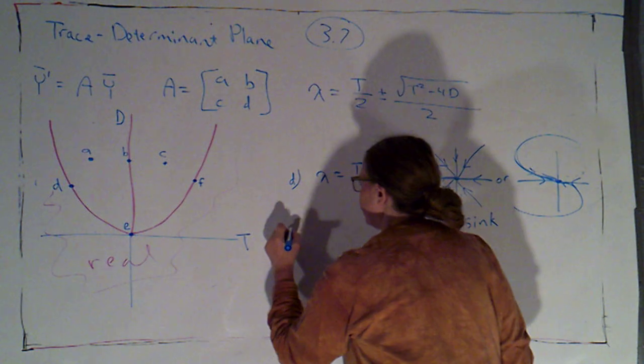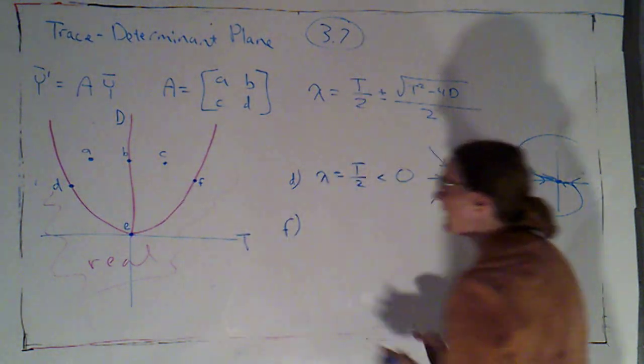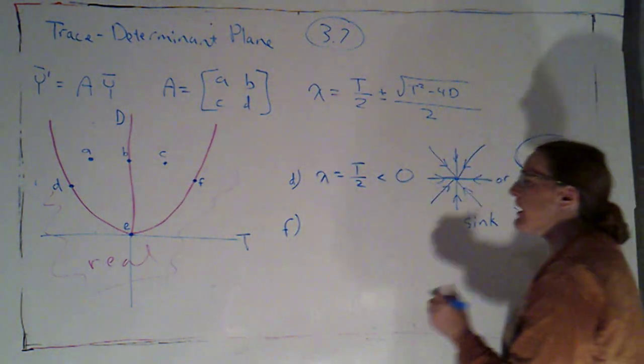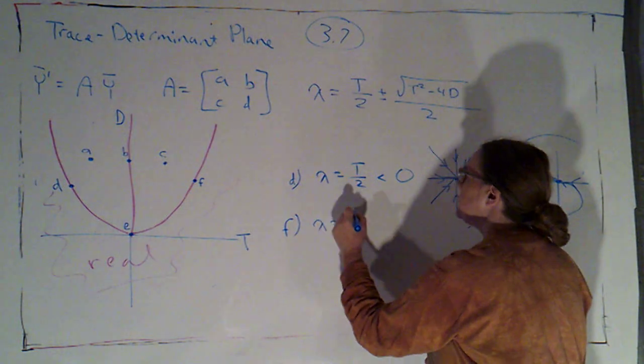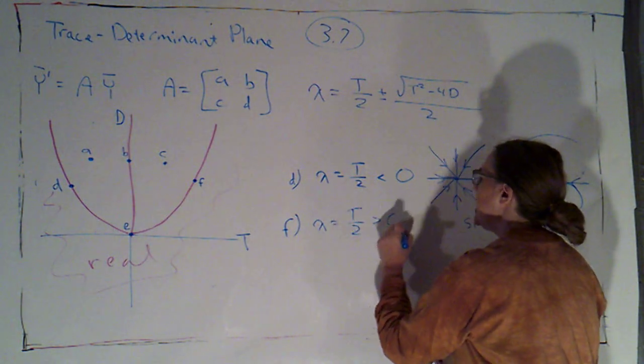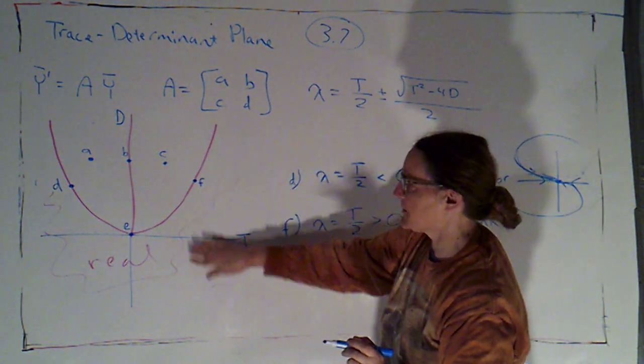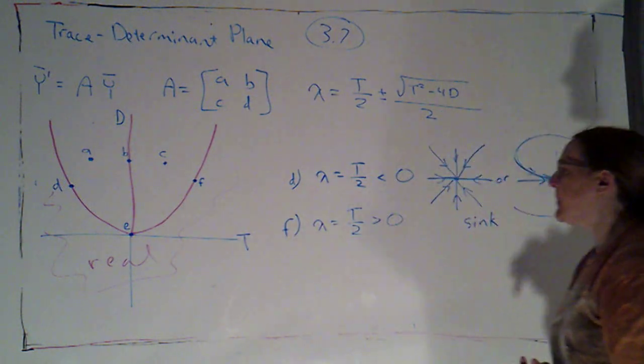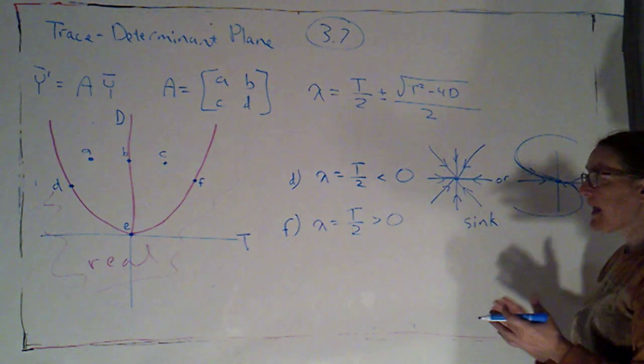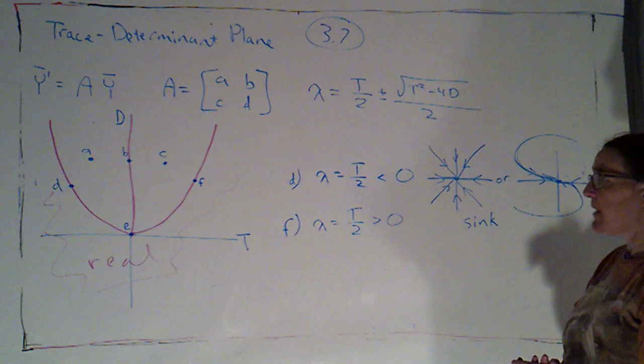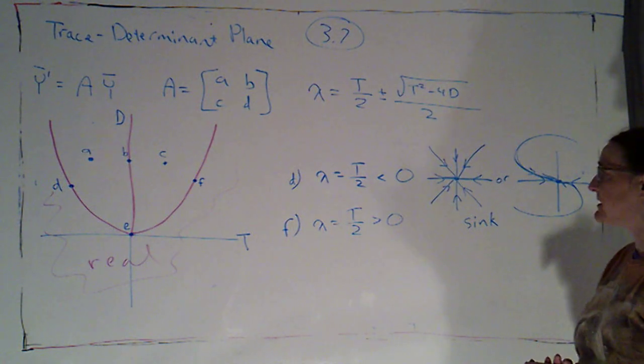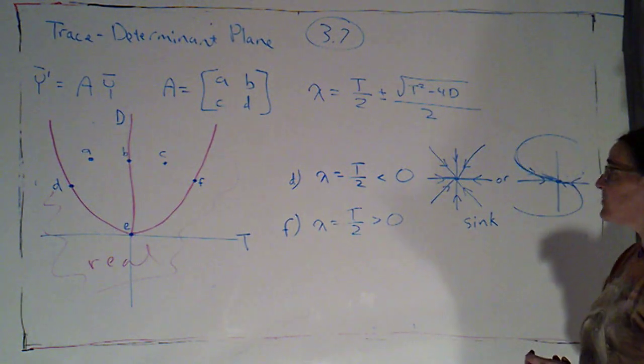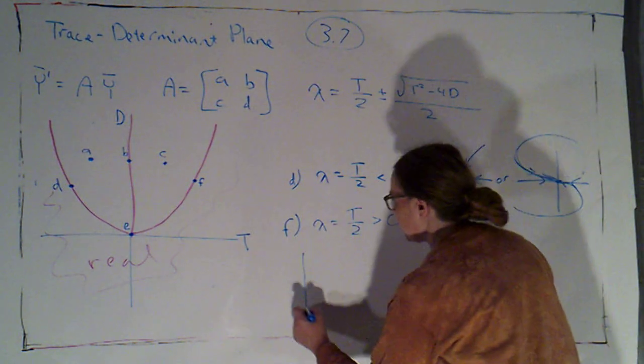Let's jump to f. Then we'll come back and do e. If we're at f, my one eigenvalue is t over 2. But now that would be positive because we're in the region where t is positive. So, again, I don't have enough information based just on knowing that to know whether I'm going to have one independent or two independent eigenvectors.